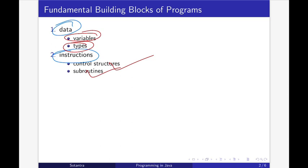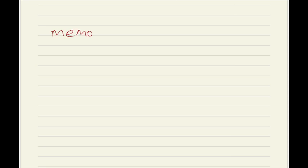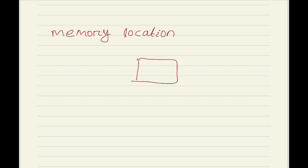First we will discuss what is a variable. A variable is just a memory location. You can consider a variable as a memory location that has been given a name, or simply think of a variable as a kind of box in memory that can hold data. For example, this box contains 5 and the name of the variable is x.